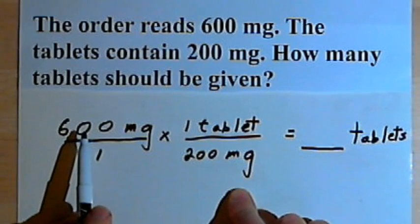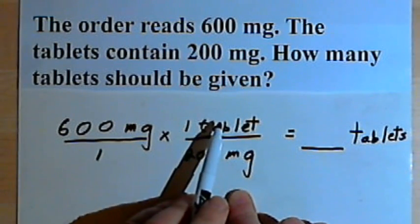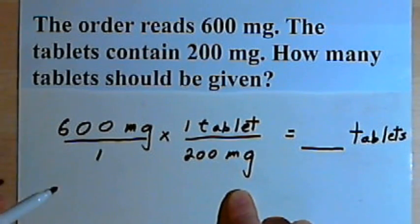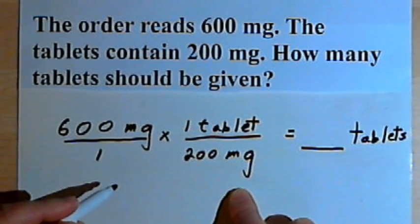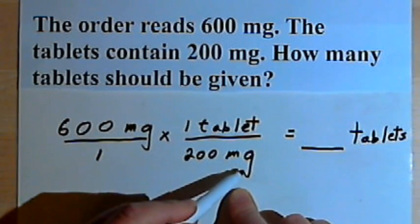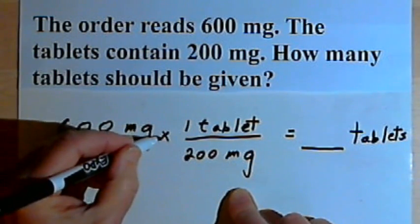When I'm dealing with fractions, I want to multiply all of the numerators, multiply across, and then multiply all of the denominators. But before that, I want to see if I can simplify what I've got. I've got milligrams in both the numerators and the denominators. So I'm going to cancel out the milligrams.